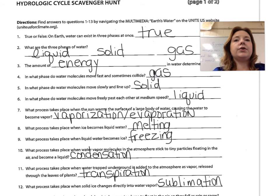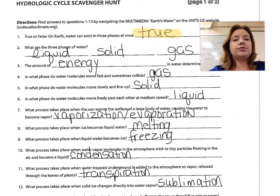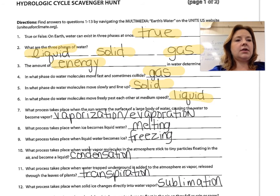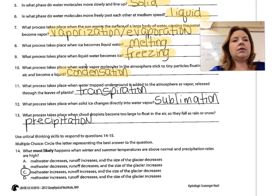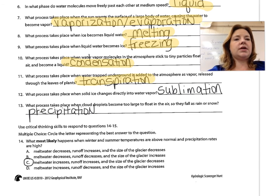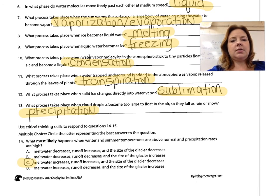Flip your crossword worksheet over to check answers for the other worksheet. Number one: true. Number two: liquid, solid, and gas. Number three: energy. Number four: gas. Number five: solid. Number six: liquid. Number seven: vaporization and evaporation. Number eight: melting. Number nine: freezing. Number ten: condensation. Number eleven: transpiration. Number twelve: sublimation. Number thirteen: precipitation. Number fourteen: melt water increases, water runoff increases, and the size of the glacier will decrease.